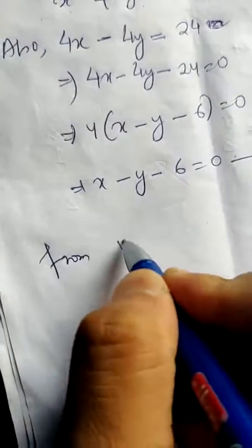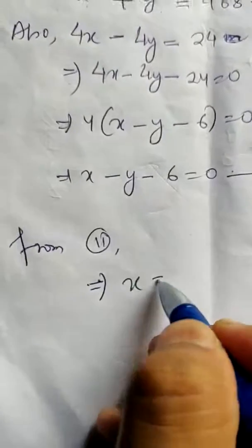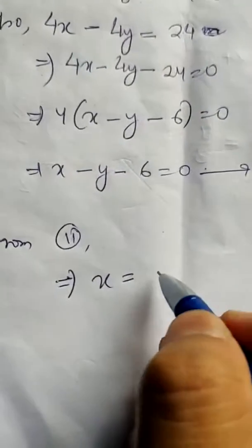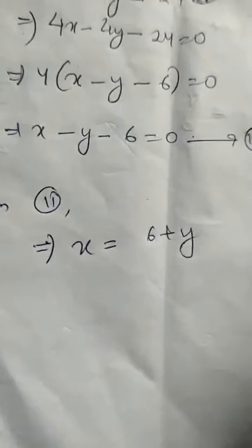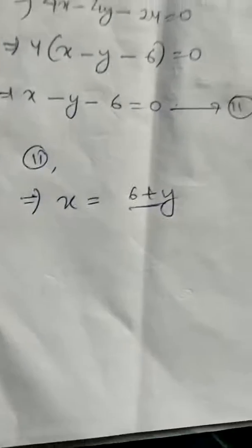Now recall the substitution method — from one equation we isolate a variable and substitute into the other. Since equation 2 is simpler, I'll use it. From equation 2, keeping x on the left-hand side and taking the rest to the right-hand side, we get x = 6 + y. This value of x is what we'll substitute into equation 1.